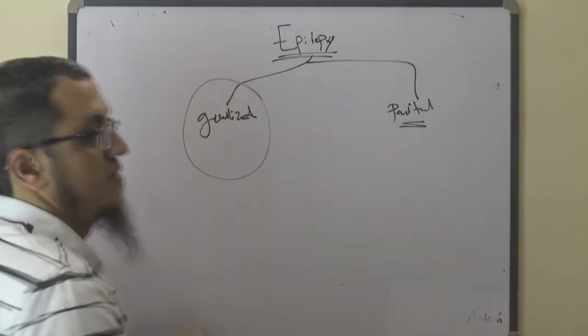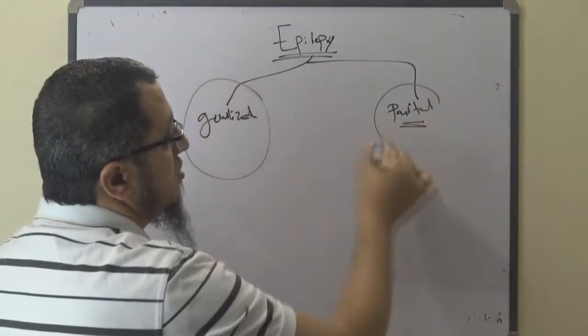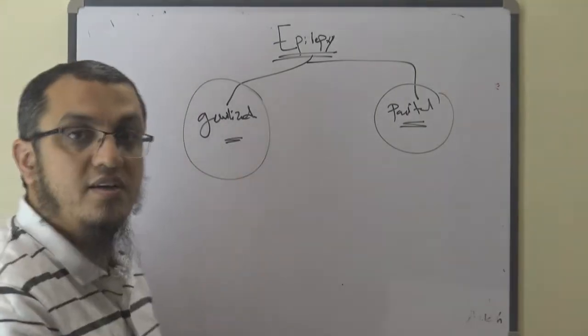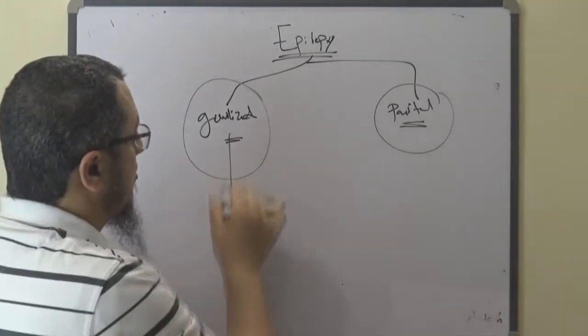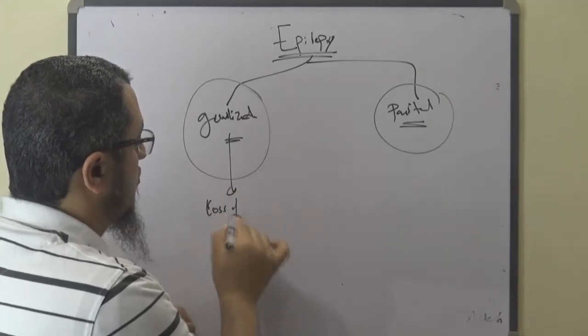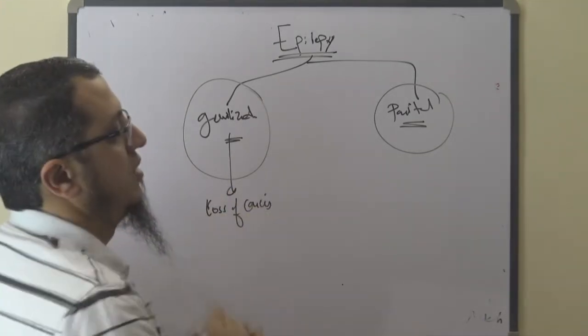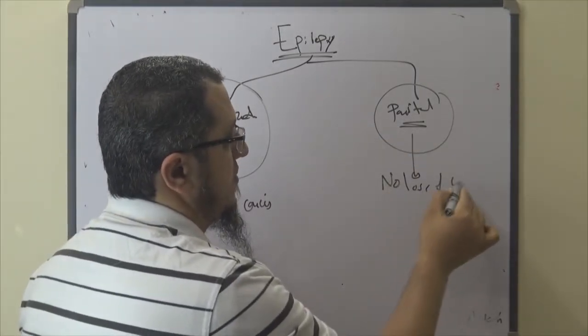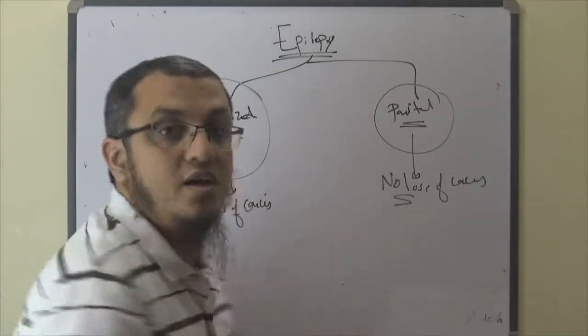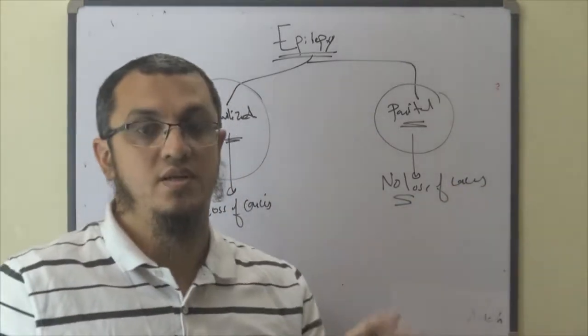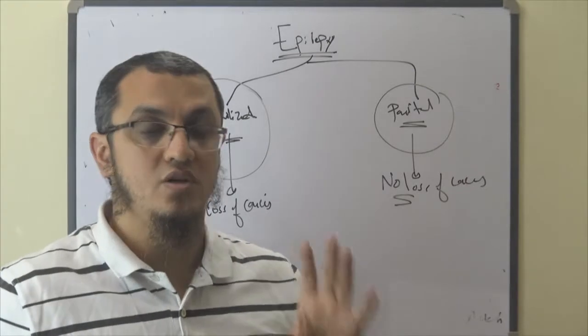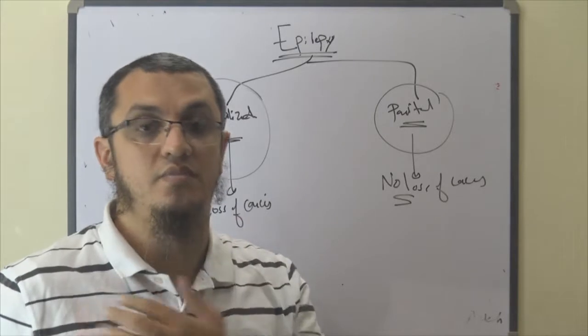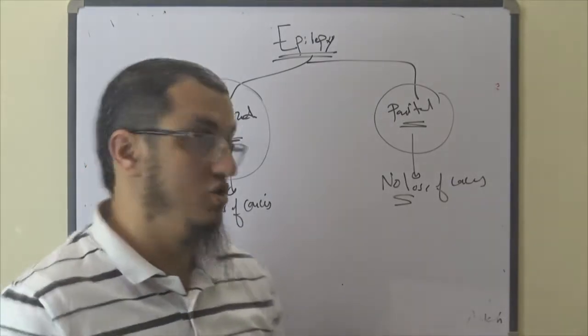Generalized is in all of the body. Focal or partial is in the focal part of the body. Generalized mostly have loss of consciousness. Generalized equals loss of consciousness. Partial, there is no loss of consciousness. So generalized has loss of consciousness, partial not. Generalized on all the body, partial in part of the body, maybe neck, arm, leg. This is partial and generalized.